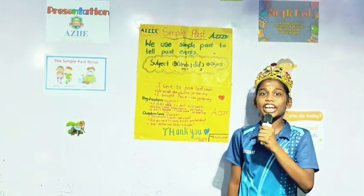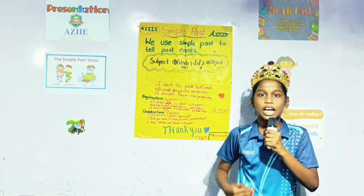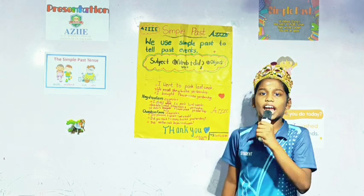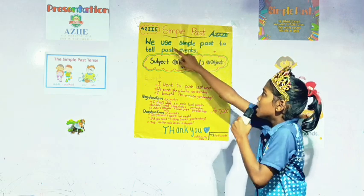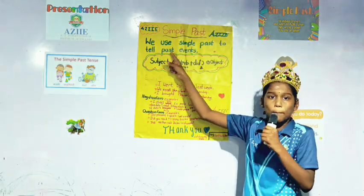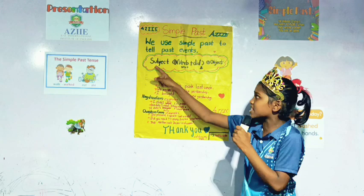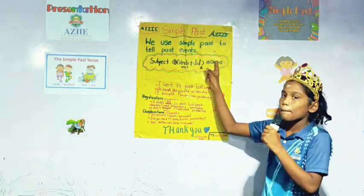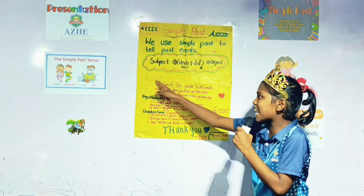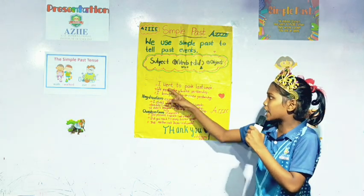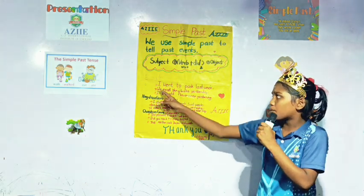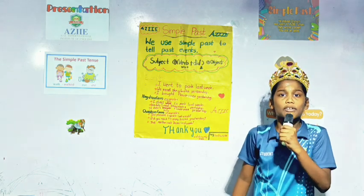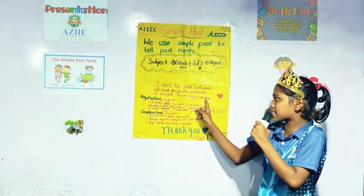Good evening all of you. My name is Sandoshida. I am a student of SE. I am going to tell about simple past. We use simple past to tell a past event. Structure is subject plus word plus deep plus object. Example: I went to park last week. We read story books yesterday. I watched several of us yesterday.